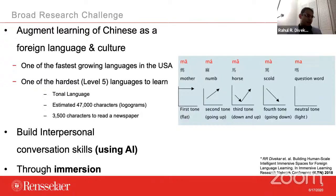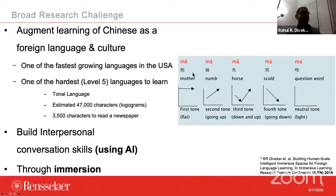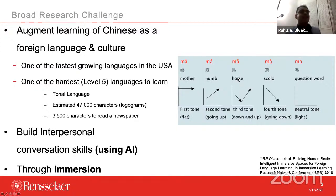This character right here is pronounced 'ma' and means 'mother.' But if you change the tone even a little bit, it starts to mean something very different. Instead of 'mā,' if I say 'mǎ,' that means 'a horse.' Could you tell that difference? That's really hard for people who don't speak a tonal language.